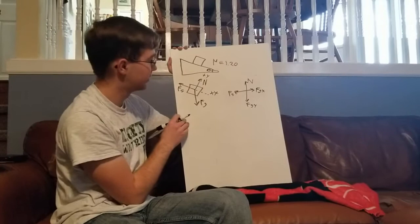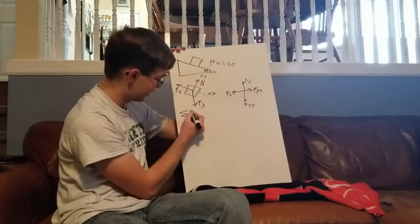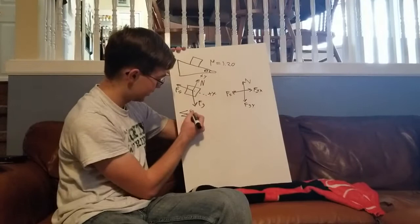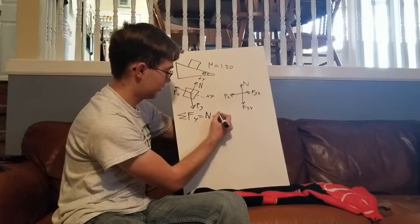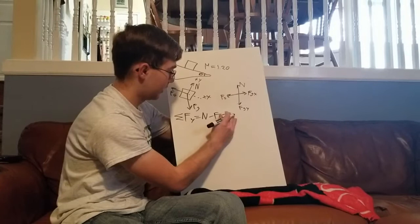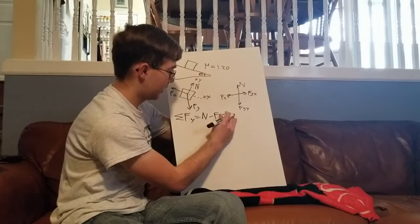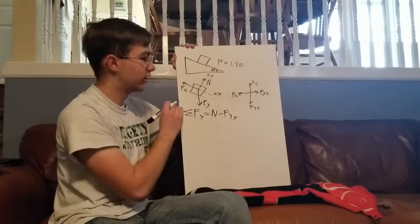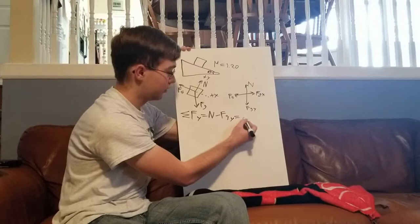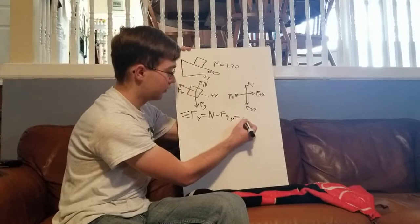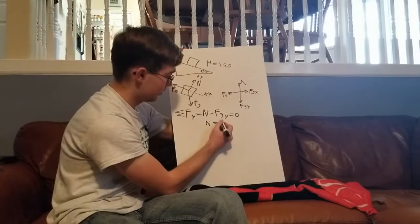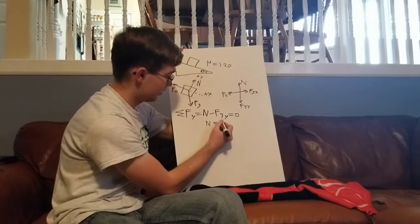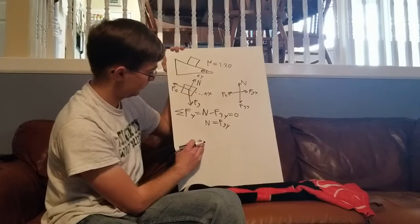Now, we'll set up Newton's second law for forces in the y direction. The sum of forces in the y direction equals my force of normal minus force of gravity in the y direction. Now, the question is asking for what the angle is for the patient to not slide so there is no acceleration. So, this would sum up to zero. I can then solve for n and say that n equals the force of gravity in the y direction. This will be helpful to hold on to.